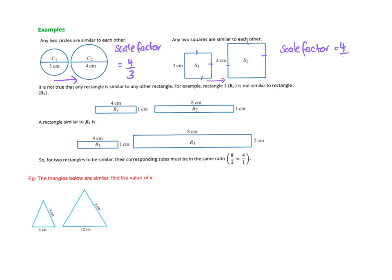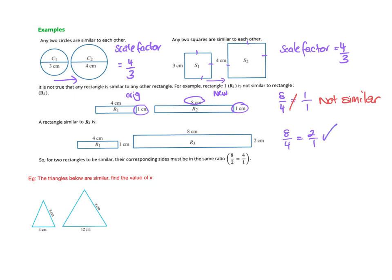Be careful — a rectangle may not be similar to another rectangle. The sides must all be in the same ratio. If I call this the new image and this the original: this length gives eight over four, but that should equal this side over that side. If it doesn't equal the same value, the shapes are not similar. In the next example it does work out — eight over four equals two over one — so those rectangles are similar.